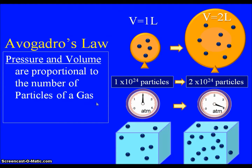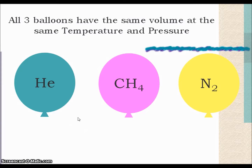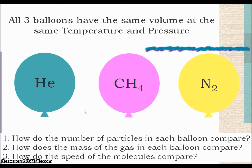So to summarize: both pressure and volume are proportional to the number of particles. If we double the number of particles, it will double either of those. Let's go back and take a look at our initial questions. I'd like you to pause the video and write down your answer to each of those three questions, and we'll see if you're correct.